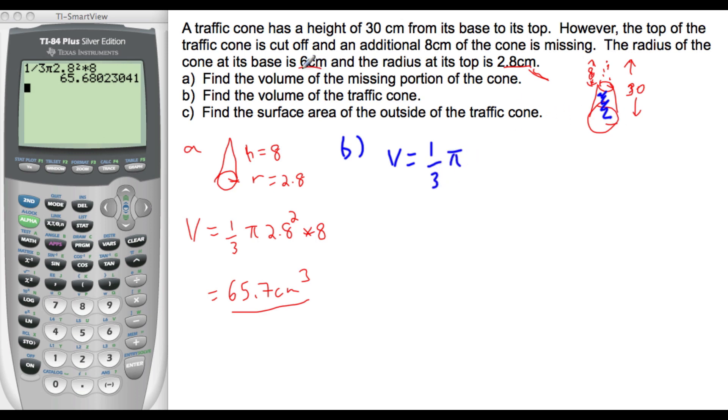So let's find the entire cone and we can subtract 65.7. So the entire cone is 1 third pi. Now our base here, 6 centimeters, so 6 squared times the height, which is 30. So 1 third pi, and then 6 squared times 30. That gives us 1,130 centimeters cubed.